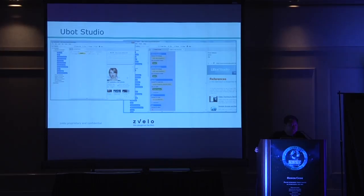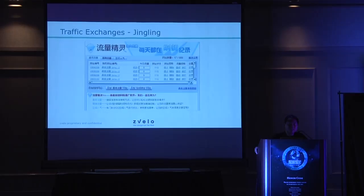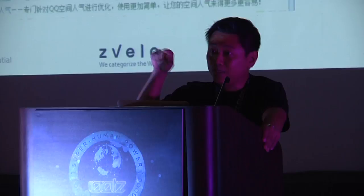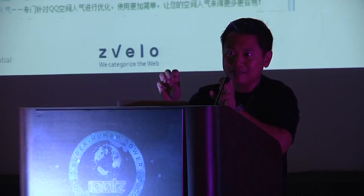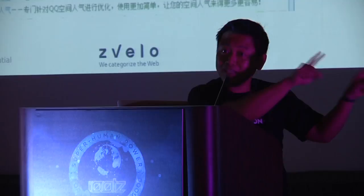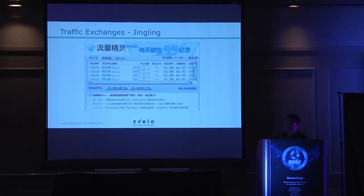There are other kinds of tools that generate traffic, not only traffic generators like uBotStudio. There's also traffic exchanges — this one is Chinese, it's called Jingling. It's a traffic exchange. What it does: when you install it in your computer, you visit other people's websites. As you visit other people's websites, you collect tokens. The more tokens you have, the more chances other people who have installed Jingling will visit your site. Traffic exchange — you're exchanging traffic. What's neat is you don't need a proxy because the traffic is already coming from different IP addresses by its nature.